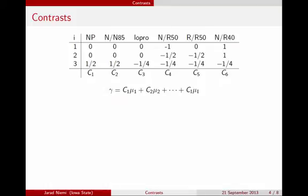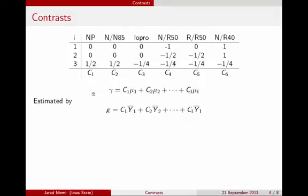In generic notation for I groups, this gamma parameter of interest is just a linear combination of the mean parameters in the model — each mean multiplied by its coefficient, all summed up. We estimate this parameter by plugging in the sample means for each group, and we call that estimated parameter G. Gamma is something we don't know because we don't know any of the mu's, but G is something we can calculate once we gather data and have estimates for our population means.